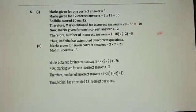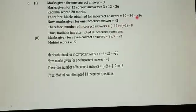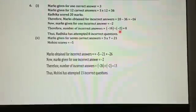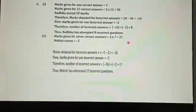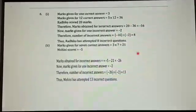So she scored minus 16 marks for incorrect answers. The marks given for every incorrect answer is minus 2. So minus 16 divided by minus 2. Total score for incorrect answers divided by total marks given for every incorrect answer. 16 divided by 2 equals 8, and minus divided by minus gives positive. So Radhika has attempted 8 incorrect questions.